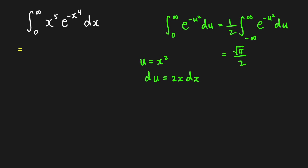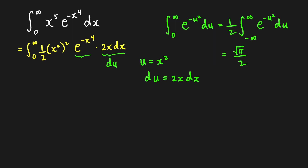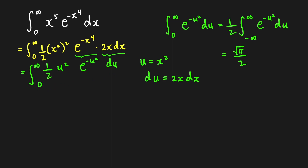We can rewrite the integral as the integral from 0 to infinity of (x squared) squared times e raised to negative x raised to 4 times 2x dx times one-half. Replacing 2x dx with du, e raised to negative x to the 4th with e raised to negative u squared, and x squared with u, we get one-half times the integral of u squared times e raised to negative u squared du. To evaluate this, we use integration by parts with the tabular (DI) method. We choose dv equal to e raised to negative u squared times negative 2u, since this form is easily integrable by substitution.